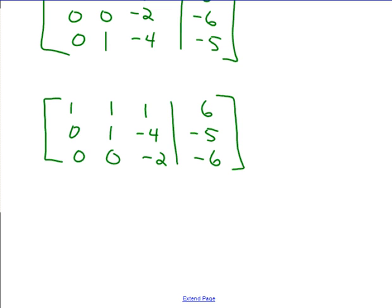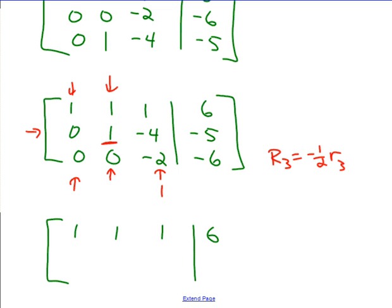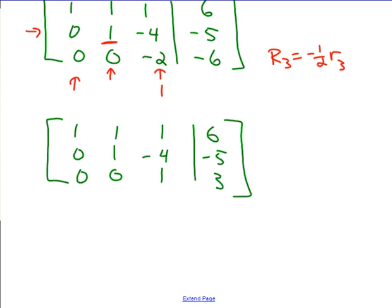Now I'm very close. My first column has a 1 on top and all 0s below. My second column has a 1 in the second row and a 0 below it. I need this last entry to be a 1. Since there are no other terms, I can multiply row 3 by a constant: negative one-half. Negative 2 times negative one-half is 1, and negative 6 times negative one-half is 3. So my final augmented matrix in row echelon form is: 1, 1, 1, 6 then 0, 1, negative 4, negative 5 then 0, 0, 1, 3. In our next video, we'll talk about how to use that to solve the system.